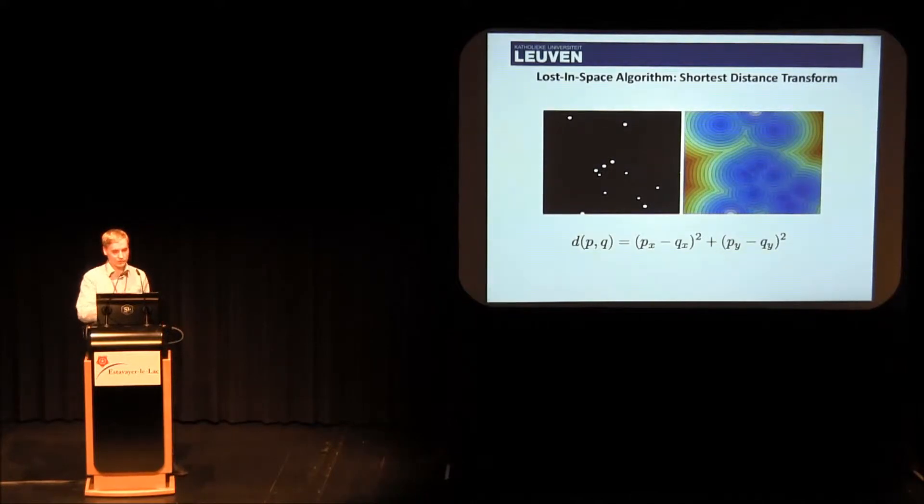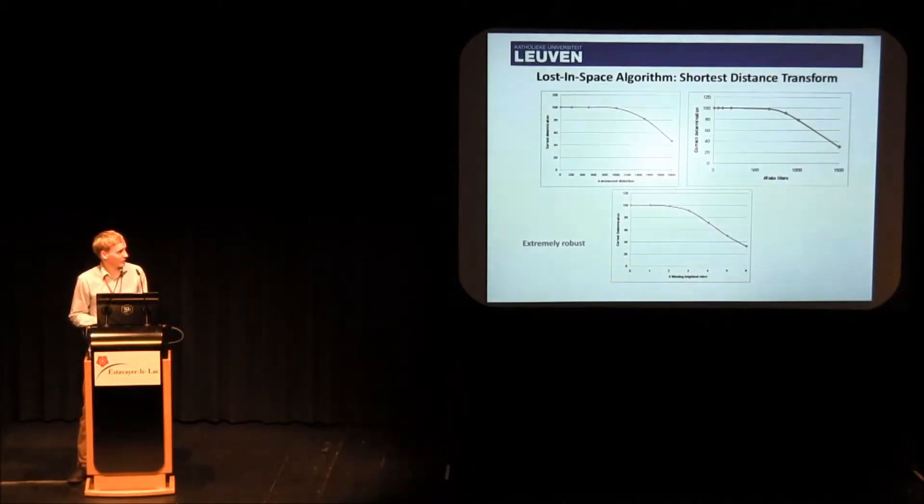The way in which we do it, is to use the shortest distance transform algorithm, which basically takes the star image, and turns it into a distance map. On the left you see Orion, on the right you see the distance map on that, and a distance map is something that holds in every position the distance towards the closest star. Then we can determine, then we can build images out of the database, put them on this distance map, and based on that determine how closely the two images resemble each other, and that way we can determine the initial attitude.